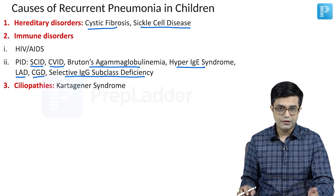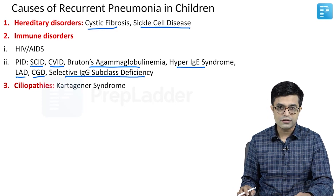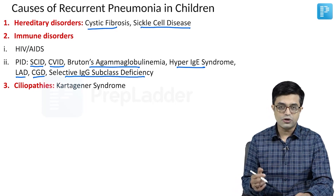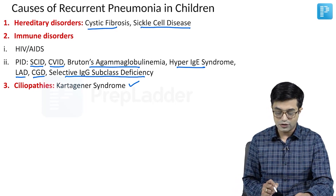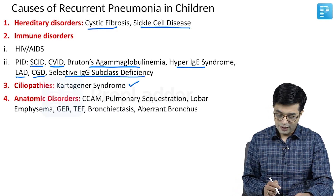Then ciliopathies — that is, ciliary disorders. Primary ciliary disorders like Kartagener syndrome can cause recurrent pneumonia.